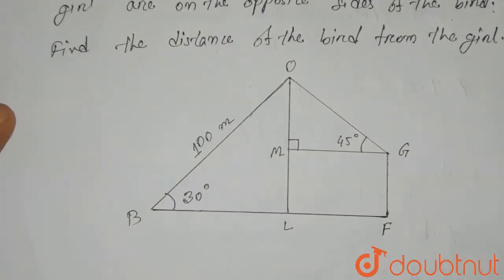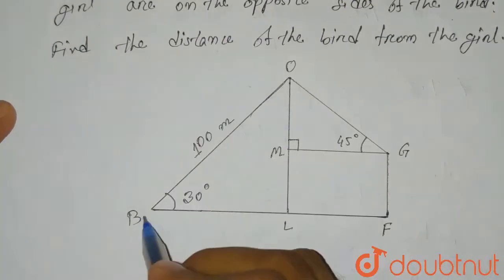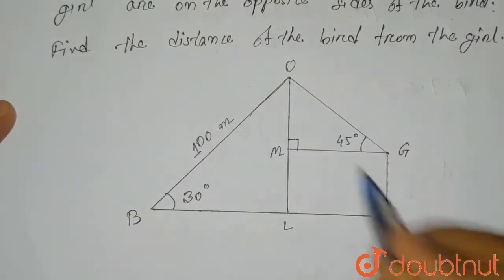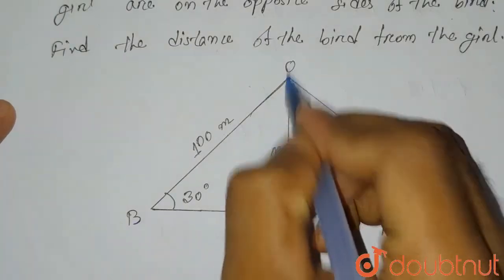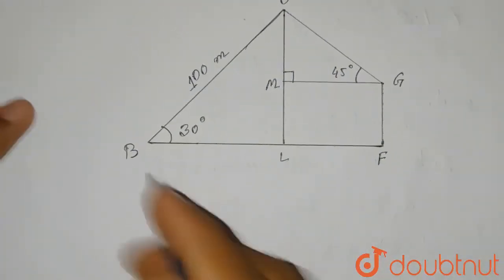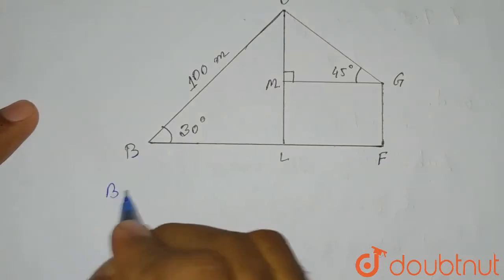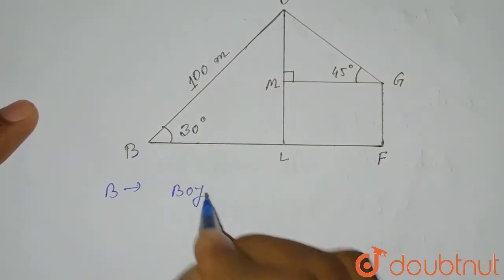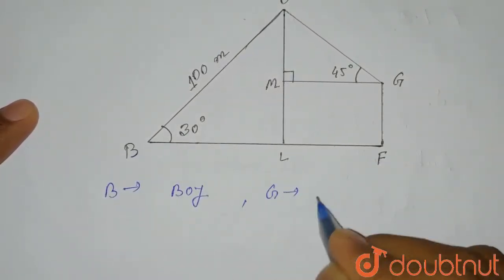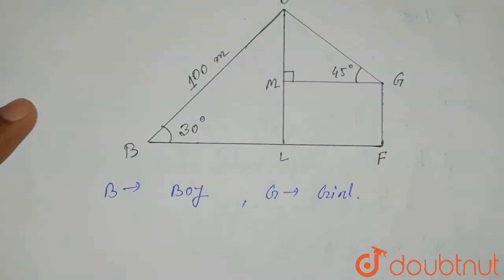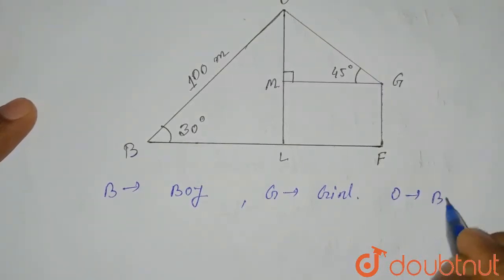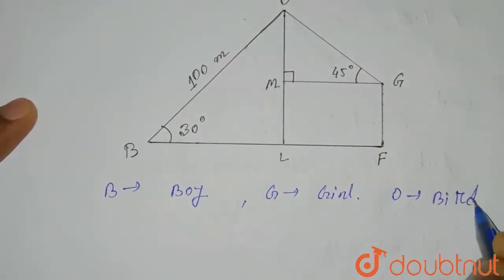Let's say this is the diagram. This is the position of the boy, this is the position of the girl, and O indicates the position of the bird. So first of all, B indicates the position of the boy, G indicates the position of the girl, and O indicates the position of the bird.